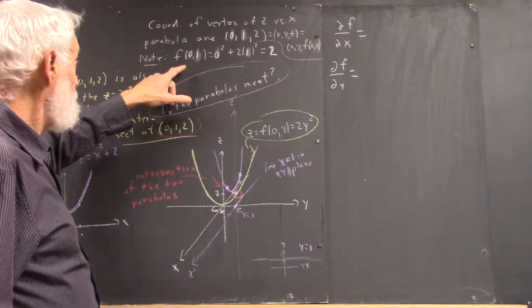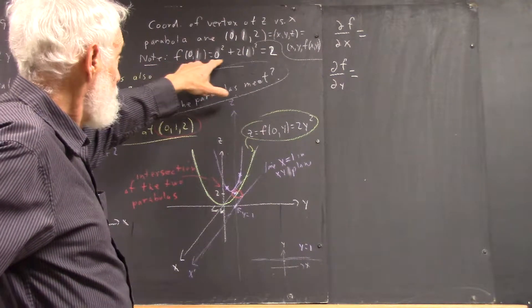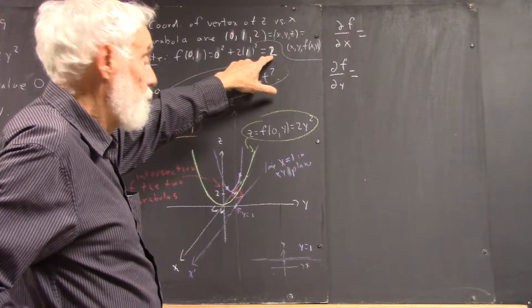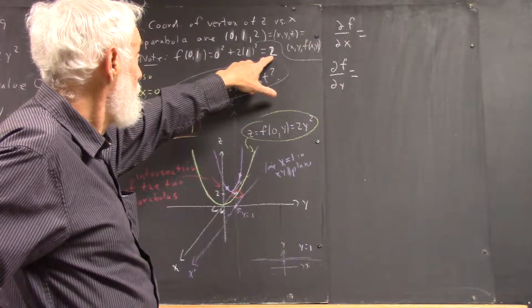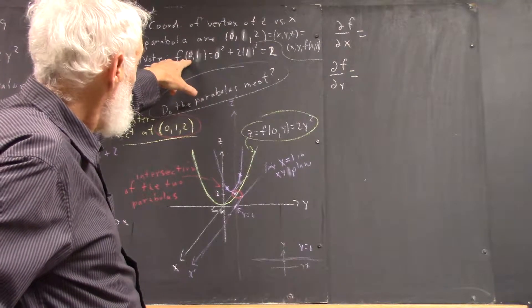Now, we also know that if we evaluate F(0, 1), we get 0² + 2(1²), which is 2. Well, holding Y equal to 0...